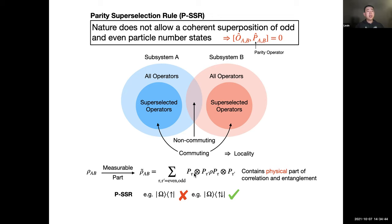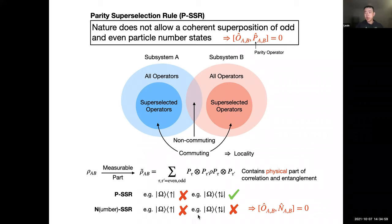On the level of quantum states, the measurable part is much smaller than what you originally have: all coherent terms between different parity sectors are projected out, and only the physical part of your quantum state contributes to the physical correlation and entanglement. Terms like killing a single electron are not allowed by PSSR, but creating or annihilating a pair of electrons is. If energetic constraints prevent even pair creation, number super-selection rules (NSSR) arise, requiring local operations to commute with the particle number operator as well.